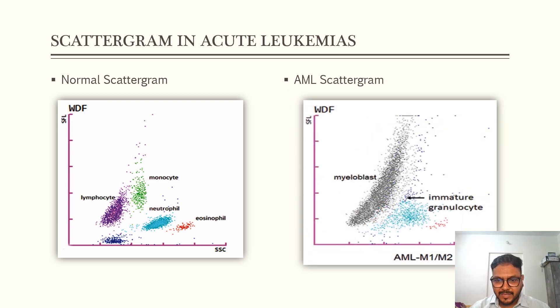Now this is the diagram of AML M1 and M2. The study says that there is no difference in the pattern observed in AML M1 and M2. M1 and M2 are with minimal differentiation and minimal maturation. So we can see two clusters. One cluster of lymphocyte, then followed by a cluster of myeloblast. These two clusters are overlapping. Now there we see clusters of immature granulocytes.